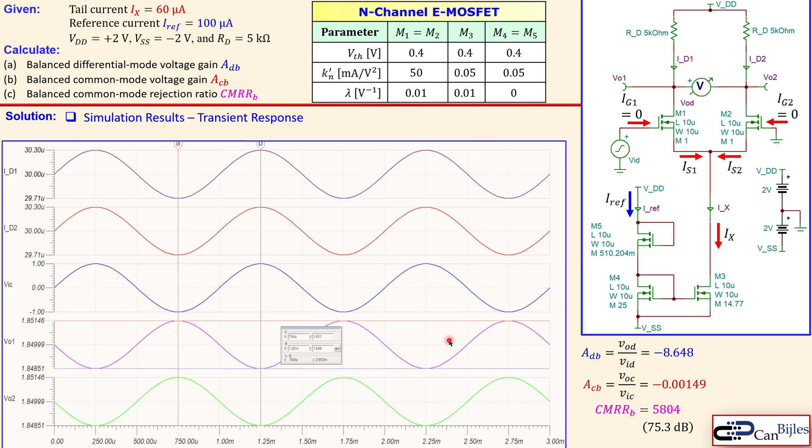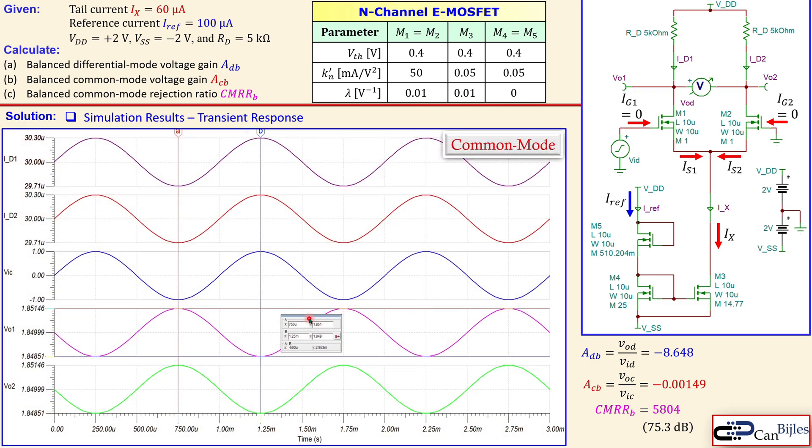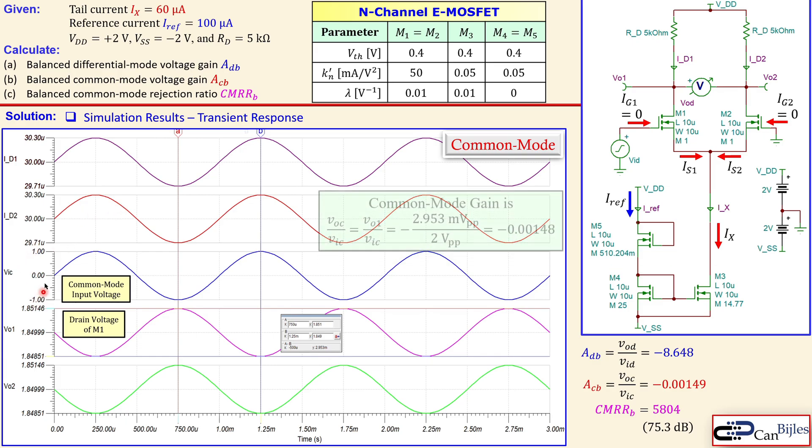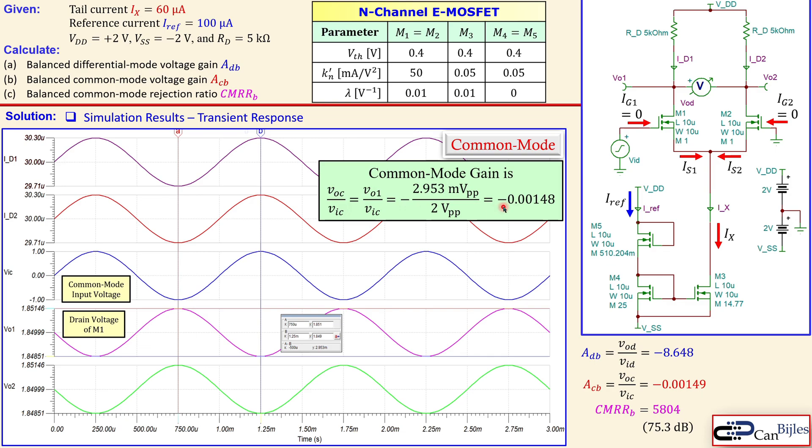Let's also look at the common mode operation. This is the plot for common mode operation. The common mode voltage gain—in light green is our output, V_O1 or V_O2, doesn't matter. You see the phase inversion, that's why we have the minus sign. If I label the maximum and minimum, the difference is 2.953 millivolts. So the peak-to-peak value of the output, the drain of M1, is 2.953 millivolts for the applied 2 volts peak-to-peak. Calculating that gives minus 0.00148, very close to what we calculated, so this is also fine.